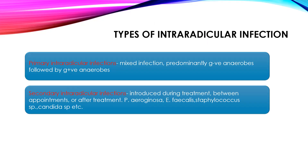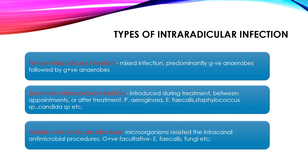For secondary intraradicular infection, certain specific microorganisms can be considered responsible. These are Pseudomonas aeruginosa, Enterococcus faecalis, Staphylococcus species, Candida species, etc. Finally, intraradicular infections which cannot be easily treated and resist routine endodontic disinfection procedures are persistent intraradicular infections. These are because of certain fastidious microorganisms such as E. faecalis and certain fungi.